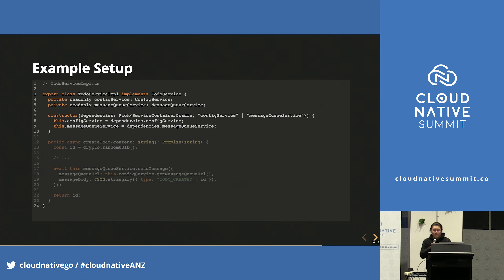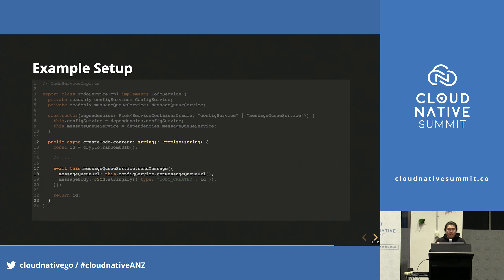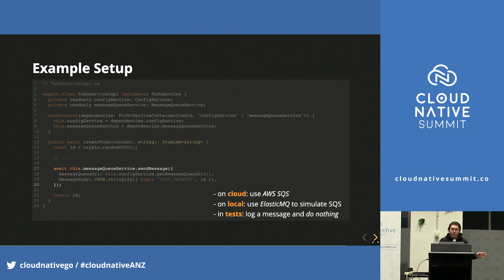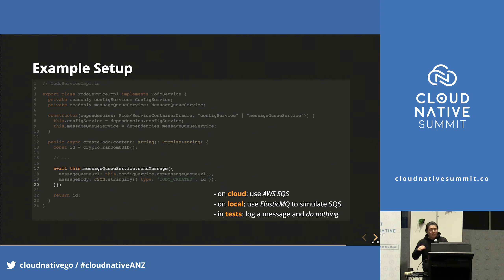Let's jump into TodoServiceImplementation. ConfigService and MessageQueueService are the dependencies of this class — they are injected via the constructor and kept as private fields, then used in the createTodo method. TodoServiceImplementation has no idea how ConfigService or MessageQueueService are created or implemented. It only needs to know that ConfigService exposes a method to get the message queue URL, and MessageQueueService can send a message. Behind the scenes, MessageQueueService on cloud uses AWS SQS, locally uses ElasticMQ to simulate SQS, and in tests just logs a message and does nothing.